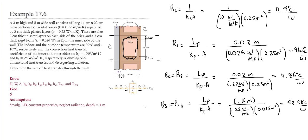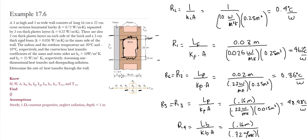R4 is the conduction resistance through the brick. The length is 16 centimeters, the thermal conductivity of the brick is 0.72 W/mK, and the cross-sectional area is 22 centimeters times 1 meter depth, giving 0.22 m². This gives R4 equal to 1.01°C/W.